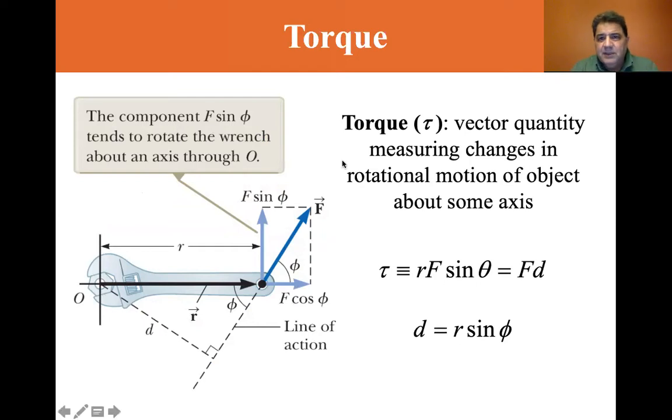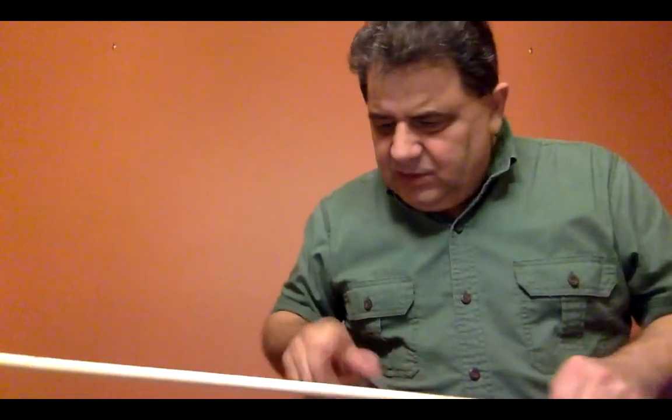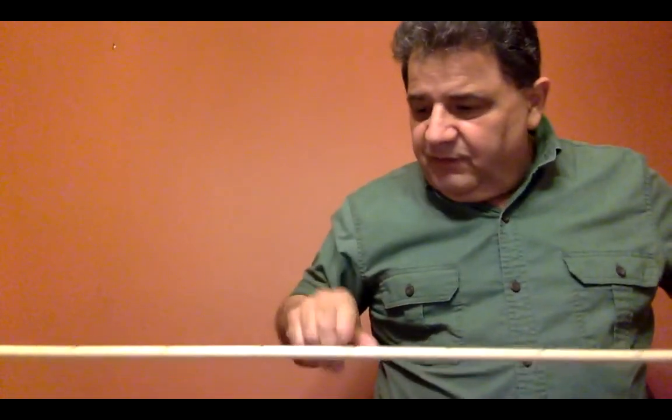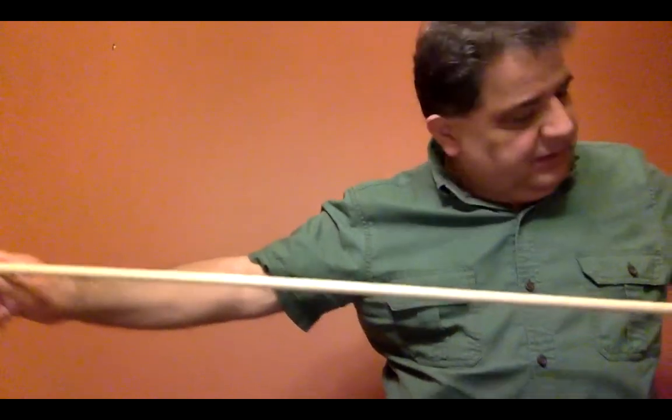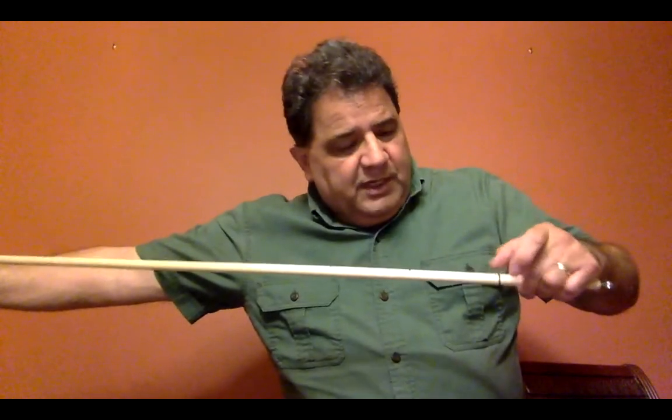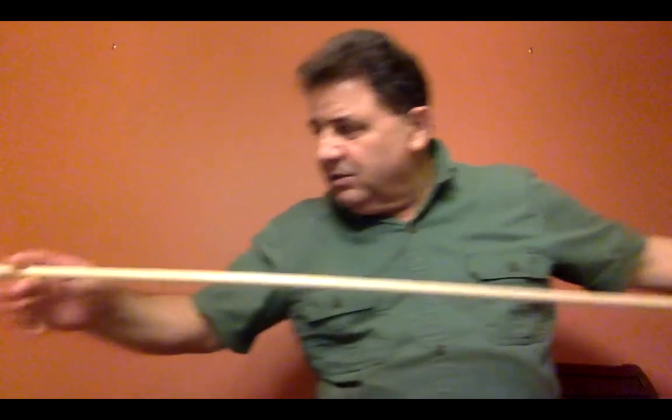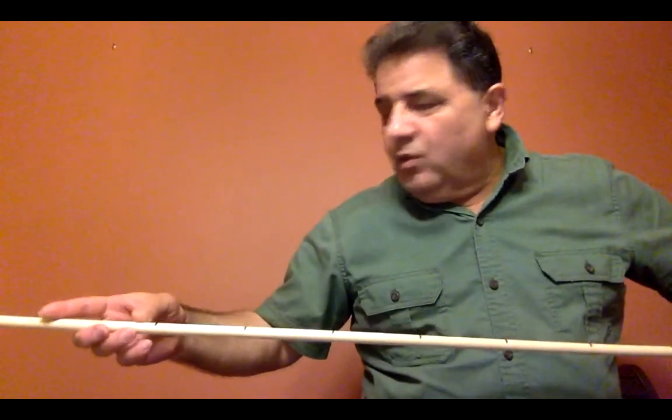I'm going to try a little demo. I've got a little dowel rod here. This is going to be my zero — this is 10, 20, 30, 40, 50, 60, 70, 80, 90, one meter. So from this zero point here, this is my handle at zero, and this end is one meter.